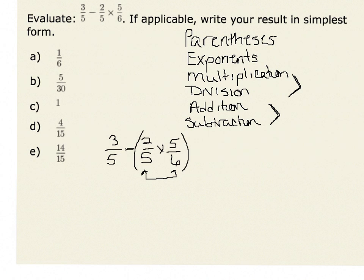We could put our parentheses around 2 fifths times 5 sixths to illustrate that. When we multiply 2 fifths times 5 sixths, we can multiply the numerators and denominators.